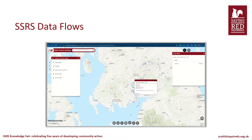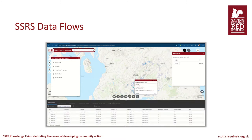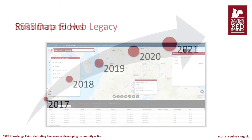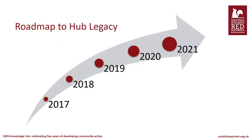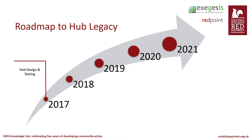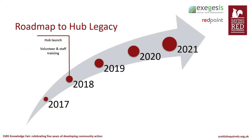Now we understand a bit more about the SSRS data flows, let's move on to our roadmap to Hub Legacy. In 2017, the Scottish Wildlife Trust worked closely with our developers Exegesis and Red Paint, who host our database, to design, develop and test the new online community hub. After a lot of hard work, the community hub was launched in 2018 and our historic data was imported to the new database.